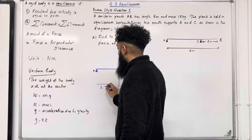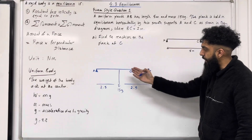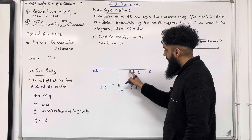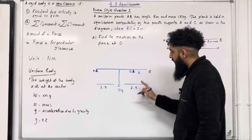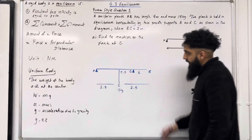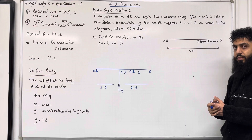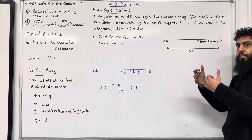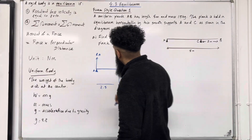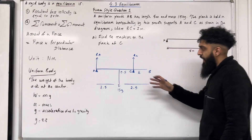We have 2.5 metres in each direction. We can fill in the gaps: B to C is 2 metres, so this small gap is 2.5 minus 2, which is 0.5 metres. The plank is in contact with two smooth supports, so they exert normal reactions on the plank. We call the normal reaction at A, Ra, and the normal reaction at C, Rc. That is my complete force diagram.